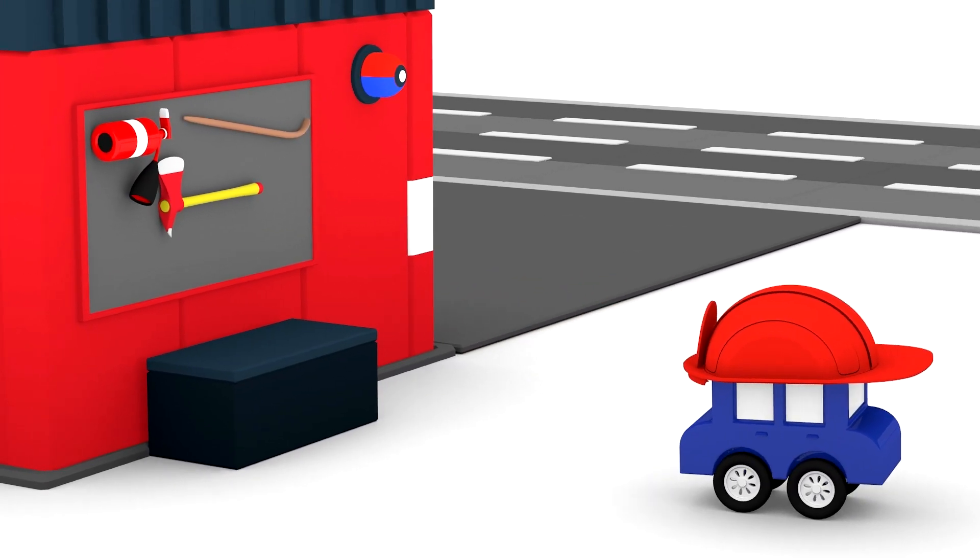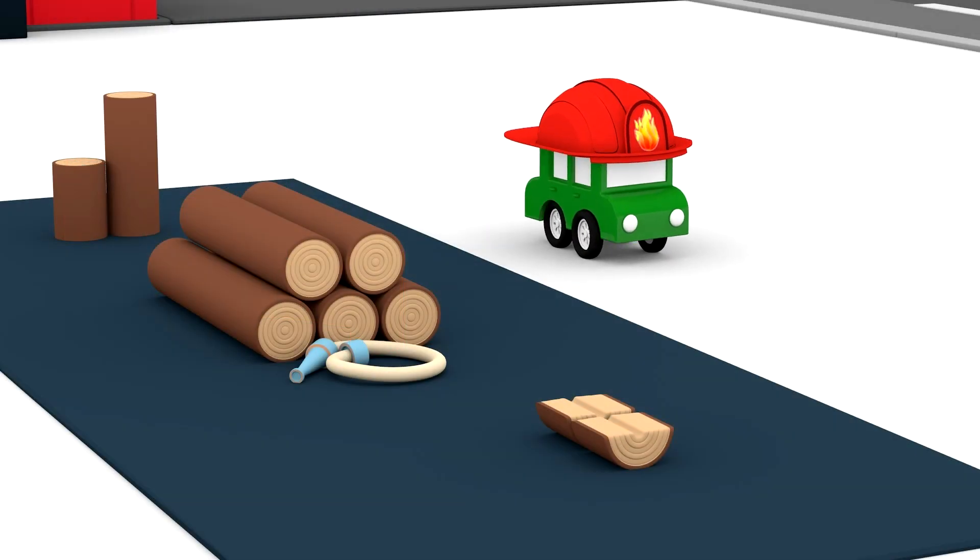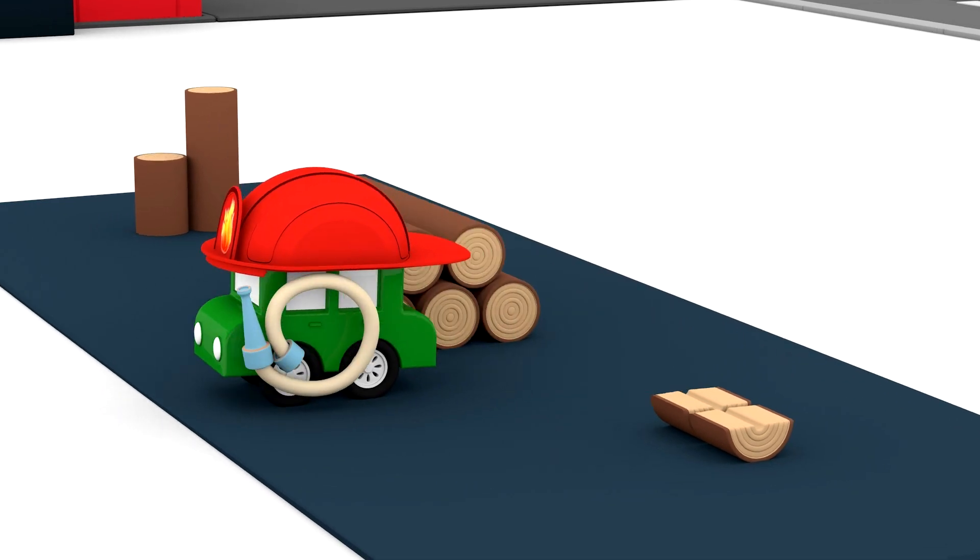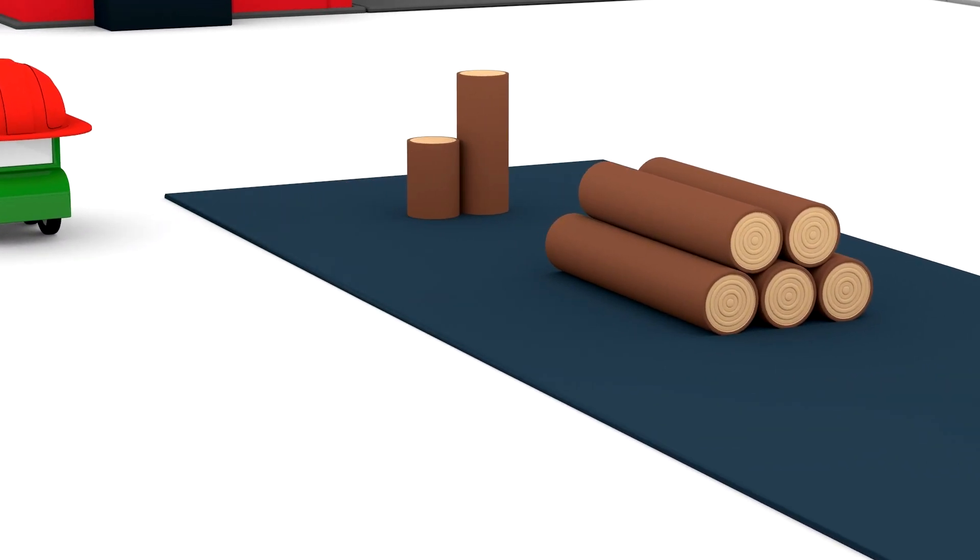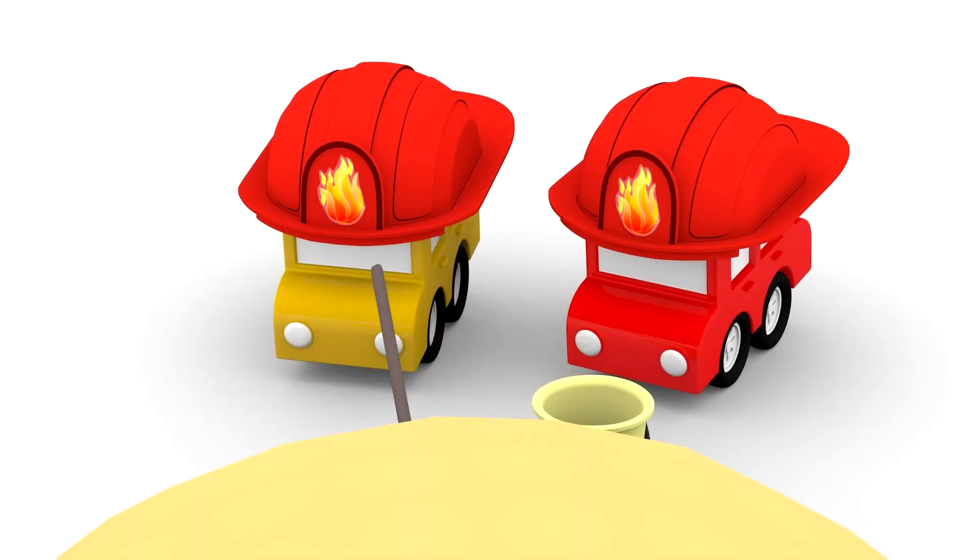Now, what else can we use to extinguish a fire? Look, green car, there is a fire hose for spraying water onto fires because water will also extinguish a fire. We can also put out fires with sand.